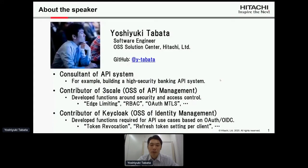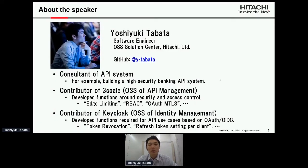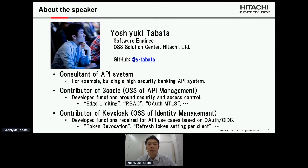I mainly work as a consultant for API systems and I've built various API systems, for example a high-security banking API system. I'm also a contributor to 3scale, which is an OSS for API management — I've developed functions around security and access control, for example rate limiting, role-based access control, and so on. I'm also a contributor to Keycloak — I've developed functions required for API use cases based on OAuth2 and OIDC, for example token revocation, refresh token settings per client, and so on.